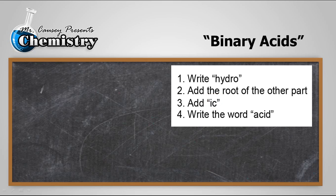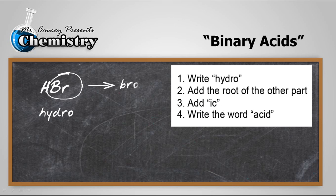Let's do the next one: HBr. We write 'hydro,' then figure out the root — we have 'hydrobrom,' add 'ic,' and the word 'acid': hydrobromic acid.